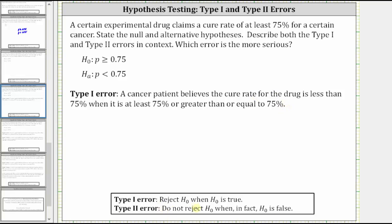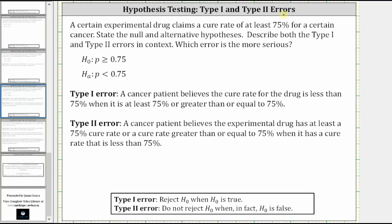The type two error is a decision to not reject the null hypothesis when in fact the null hypothesis is false. So in this context, the type two error would be a cancer patient believes that the experimental drug has at least a 75% cure rate when in fact it has a cure rate that is less than 75%. This is because the decision is to not reject the null hypothesis when in fact the null hypothesis is false.